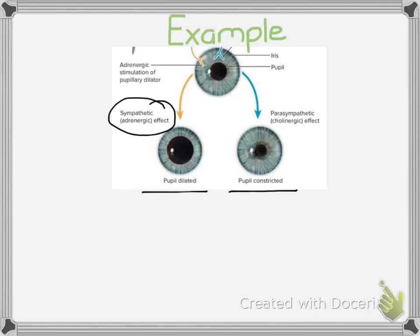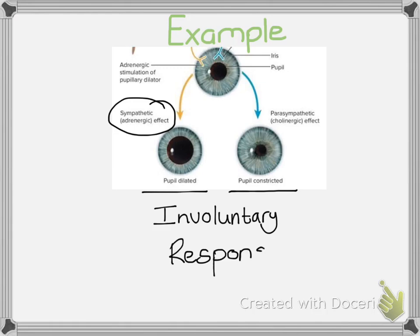Looking at these two responses, we can see they are both involuntary and effectively a response to the environment or what is occurring outside of the body. That all links back to the central nervous system, because if you are going to have a response, you need to take information from these receptors and formulate a response in the central nervous system. In your textbook, there are a number of examples of different body parts and their sympathetic and parasympathetic reactions, on page 129.